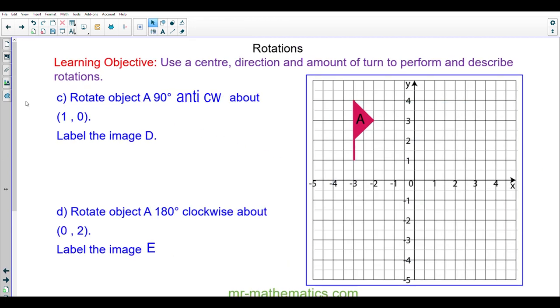Okay, for question C, you're going to rotate object A 90 degrees anti-clockwise with center one zero and label the image D by pausing the video and you can resume it when you're ready. Okay, to begin with, I'm going to lay the tracing paper.